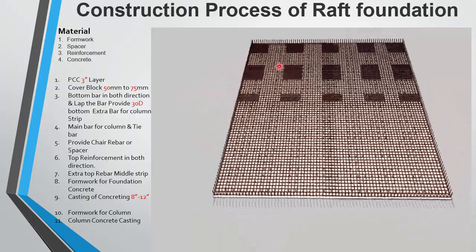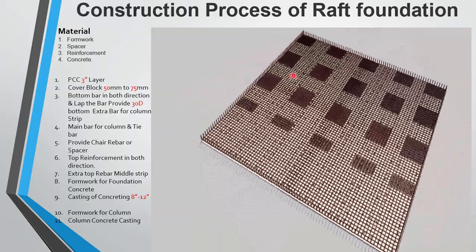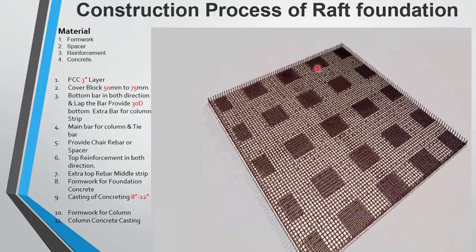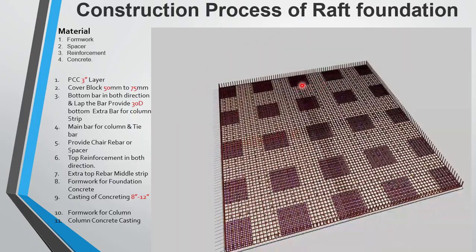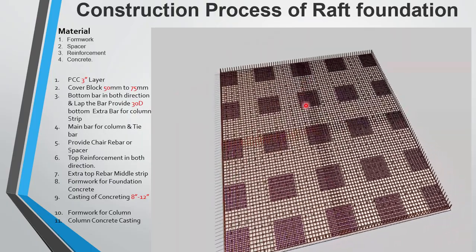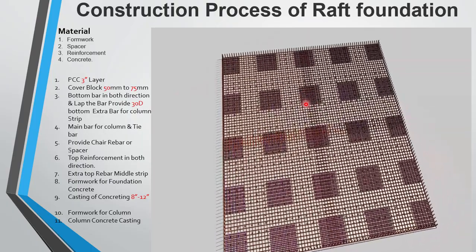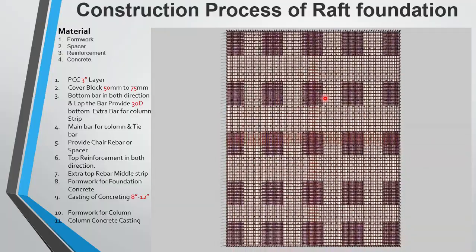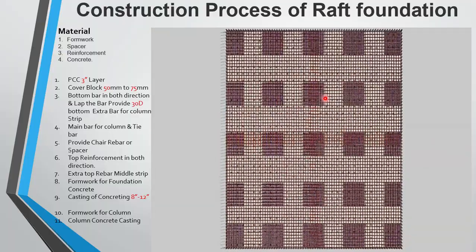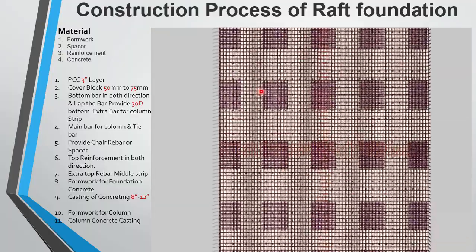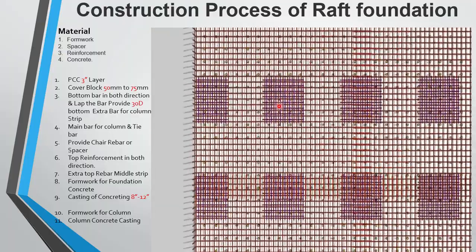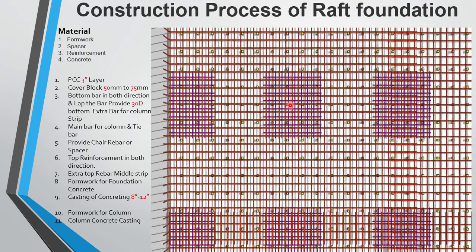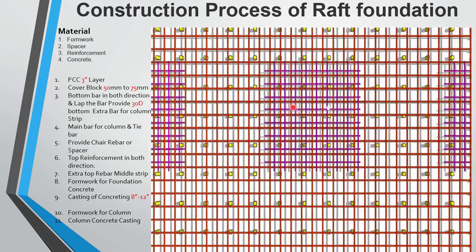This is the extra bar for column strip. You can see this extra bar for column strip. This is also the bottom bell bar.